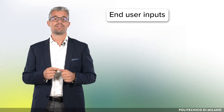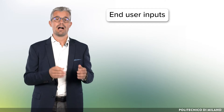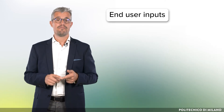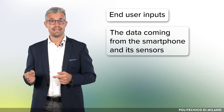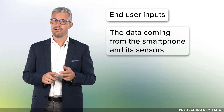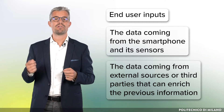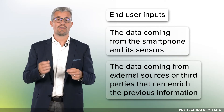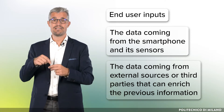First, end-user inputs — like telling Waze where to go, or telling a fitness tracker how many miles to run, your weight, or your height. Second, data coming from the smartphone and its sensors — for example, speed or current geographical position. Third, data from external sources or third parties that can enrich the previous information — for example, temperature and humidity percentage while running, recoverable thanks to the GPS position on the smartphone.